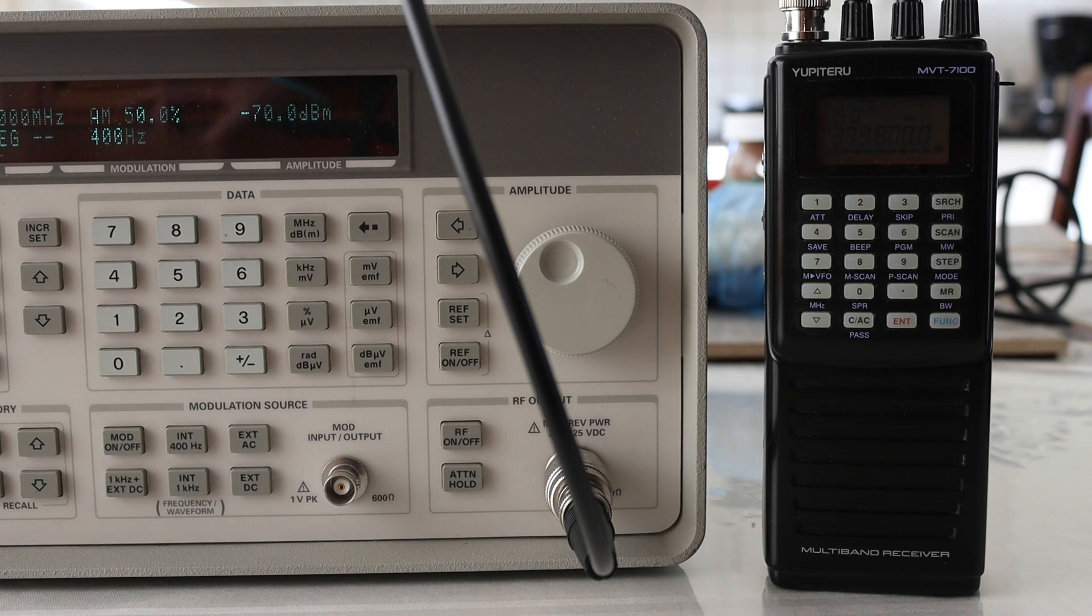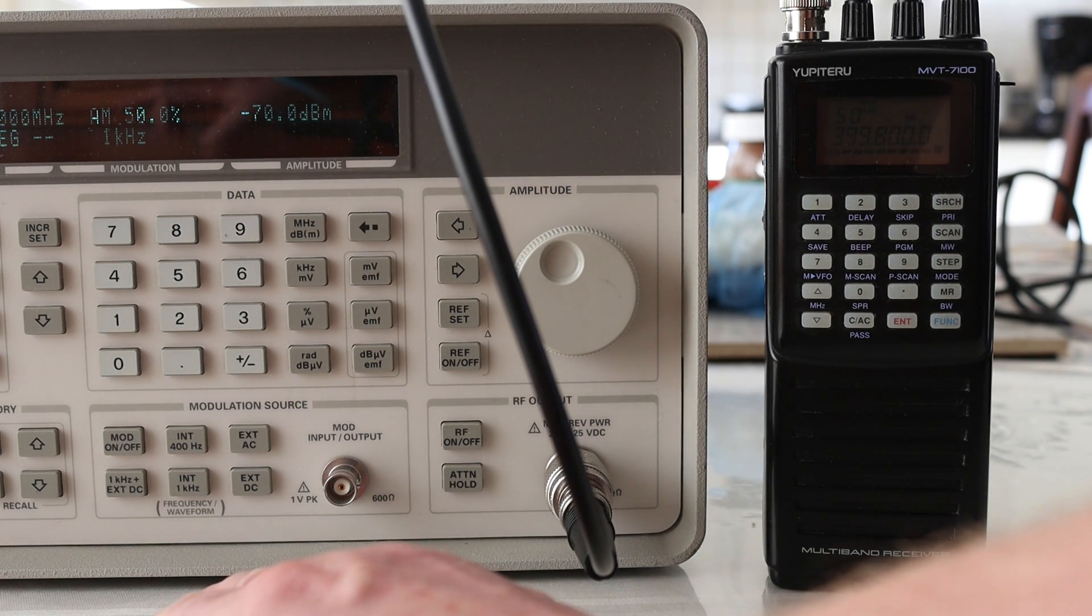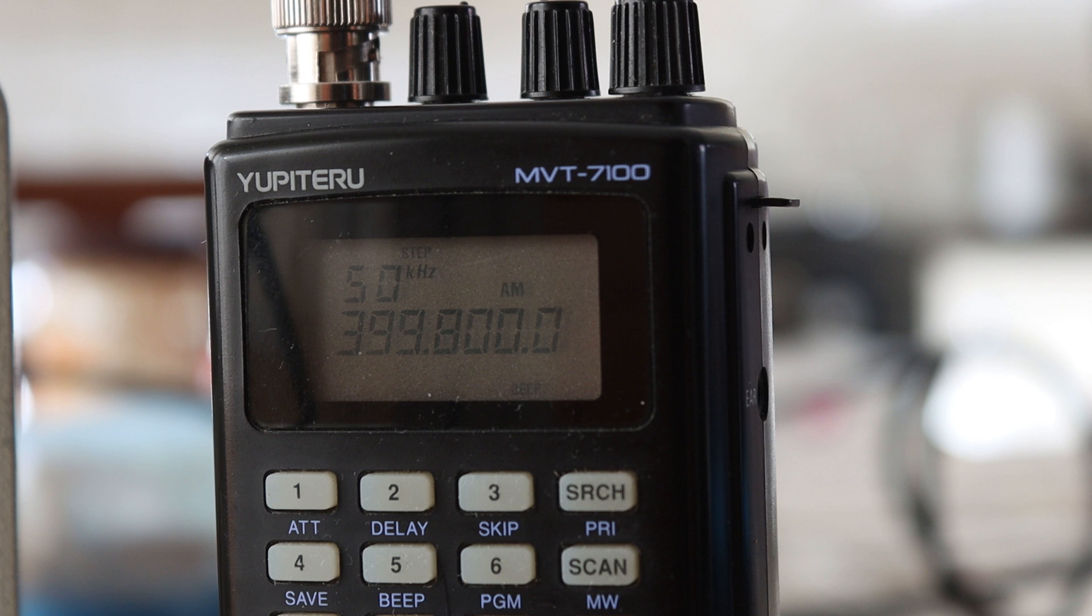By the way, for the experiment I used AM modulation, because contrary to FM, you have a constant carrier frequency, which makes observing interference more easy.